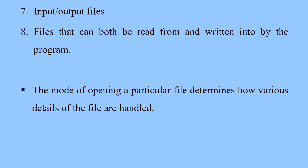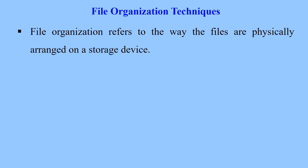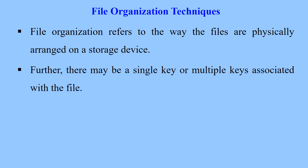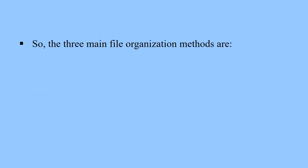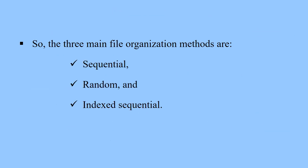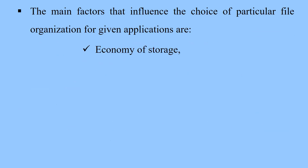The mode of opening a particular file determines how various details of the file are handled. File organization refers to the way files are physically arranged on a storage device. There may be a single key or multiple keys associated with a file. Based on physical storage and the keys used to access records, files can be classified as sequential files, relative or random files, or indexed sequential files. The main factors that influence the choice of file organization for a given application are economy of storage, convenience of updates, ease of retrieval, reliability, security, and integrity.